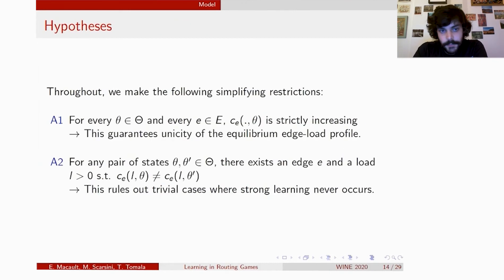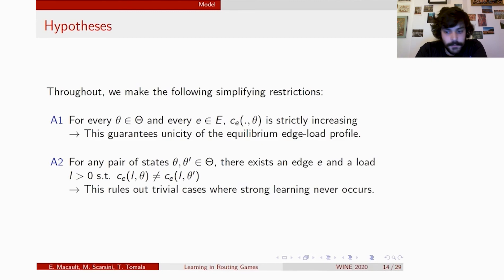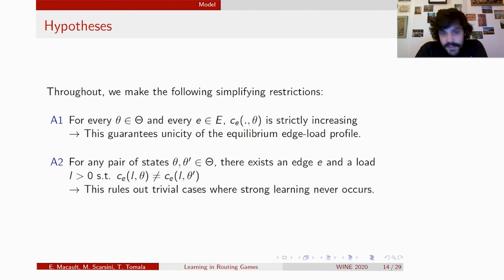To simplify the exposition, we make two assumptions. The first requires that for every state theta and every edge e, the cost function C_e given state theta is strictly increasing. This is not a necessary assumption — our results hold even without it — but it guarantees uniqueness of equilibrium edge load profiles. The second assumption is that for every pair of states, there is an edge and a load for which the cost functions differ in those two states. This simply rules out trivial cases where strong learning would never occur because two states are perfectly indistinguishable.